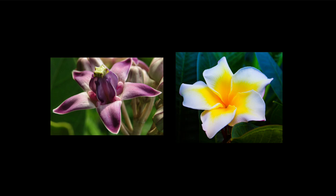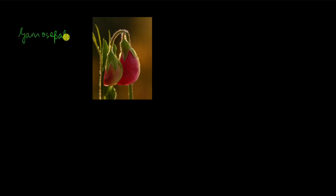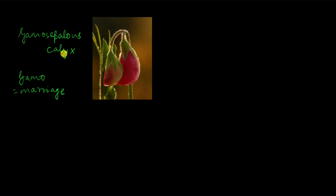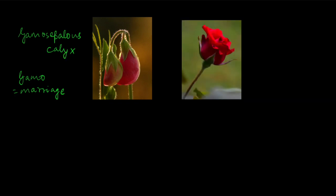Take a look at the sepals of this flower — see how they are all joined together at the base. Whenever the sepals are joined together they are called gamosepalous. 'Gamo' means marriage, so just as in a marriage two people are together, similarly in gamosepalous calyx the sepals are all together. The calyx, as you know, consists of all the sepals of a flower.